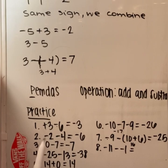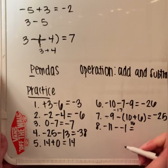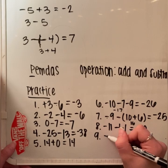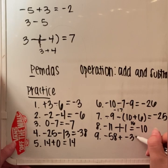Number 8: negative 11 minus negative 1. Remember, up here we turned two of the same sign into a plus sign. So right here, we're going to do the exact same thing — turn it into a plus sign. So what is the difference between negative 11 and positive 1? We have a difference of negative 10.